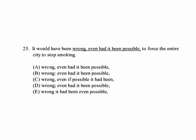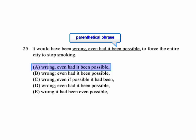Number 25. 'It would have been wrong, even had it been possible, to force the entire city to stop smoking.' This is typical of some SAT sentences — they give you an awkward-sounding sentence that is grammatically correct. Although 'even had it been possible' sounds a little awkward, it's a parenthetical phrase and hence an aside. It's not crucial to the understanding of the sentence, so it's grammatically correct.